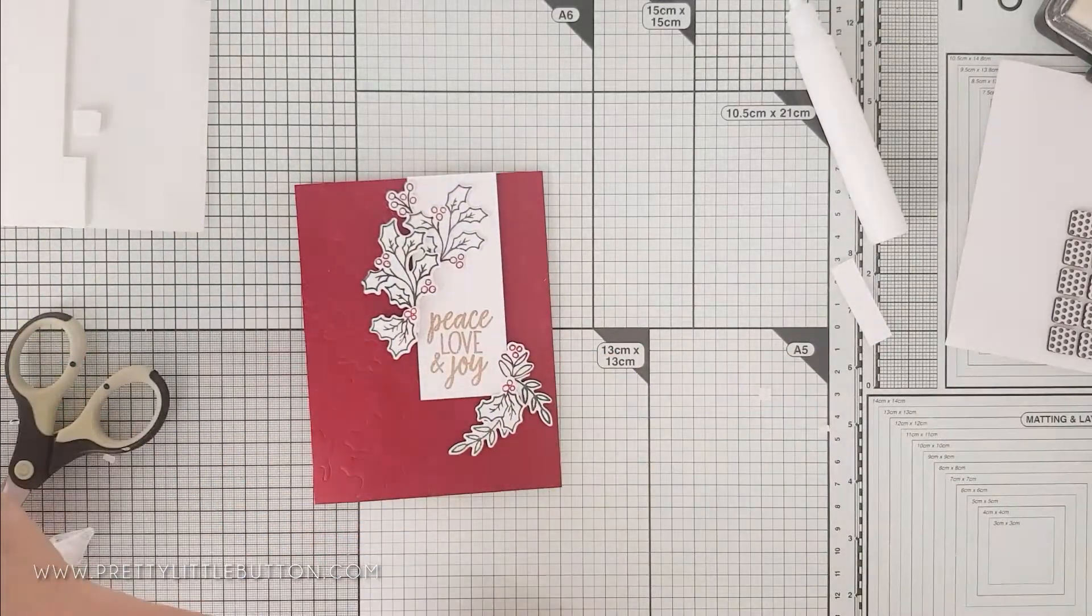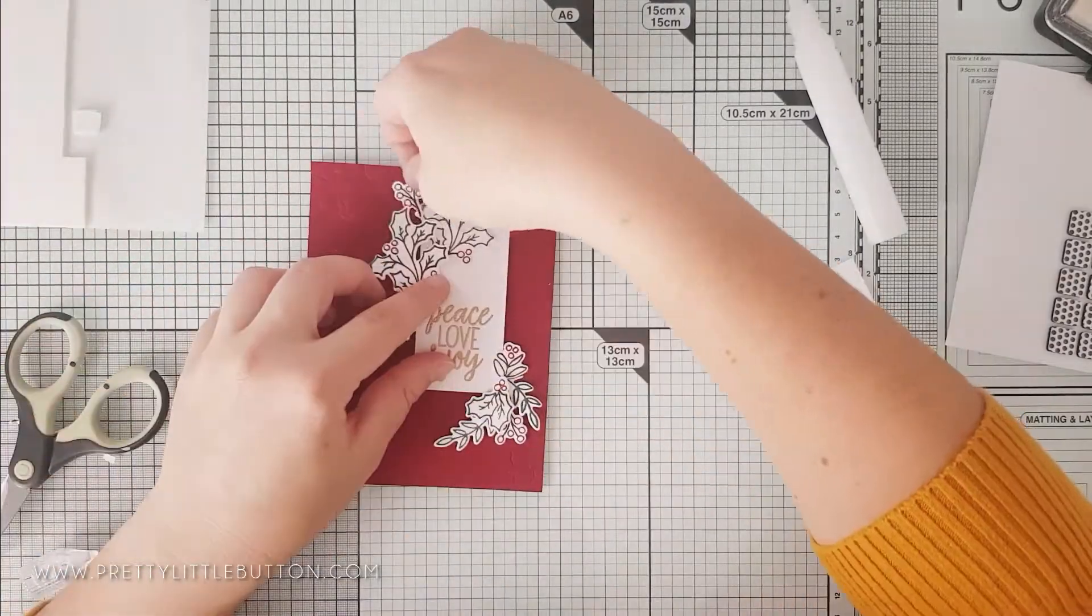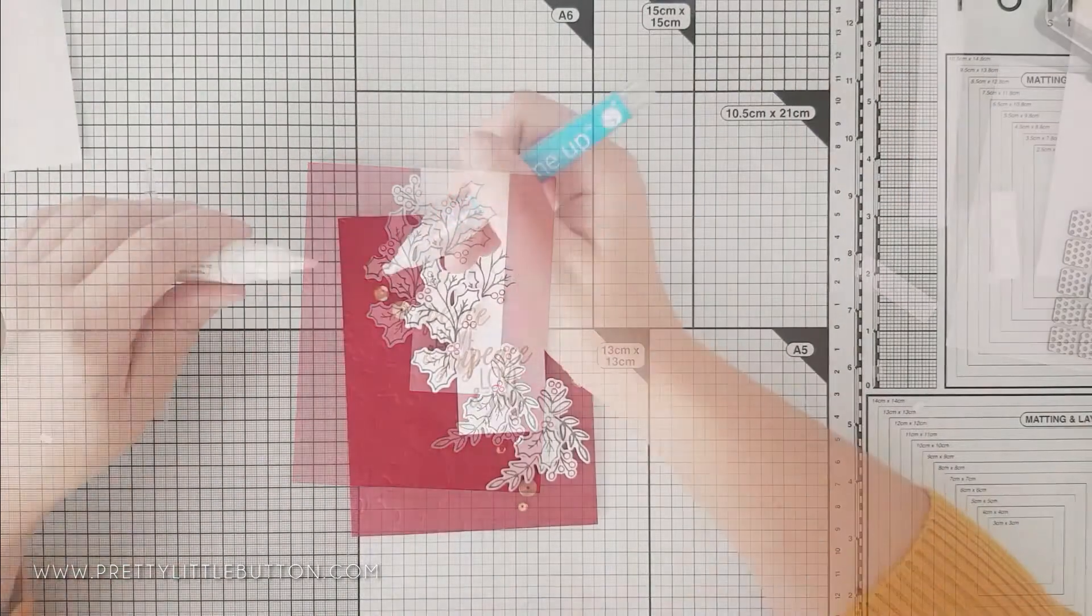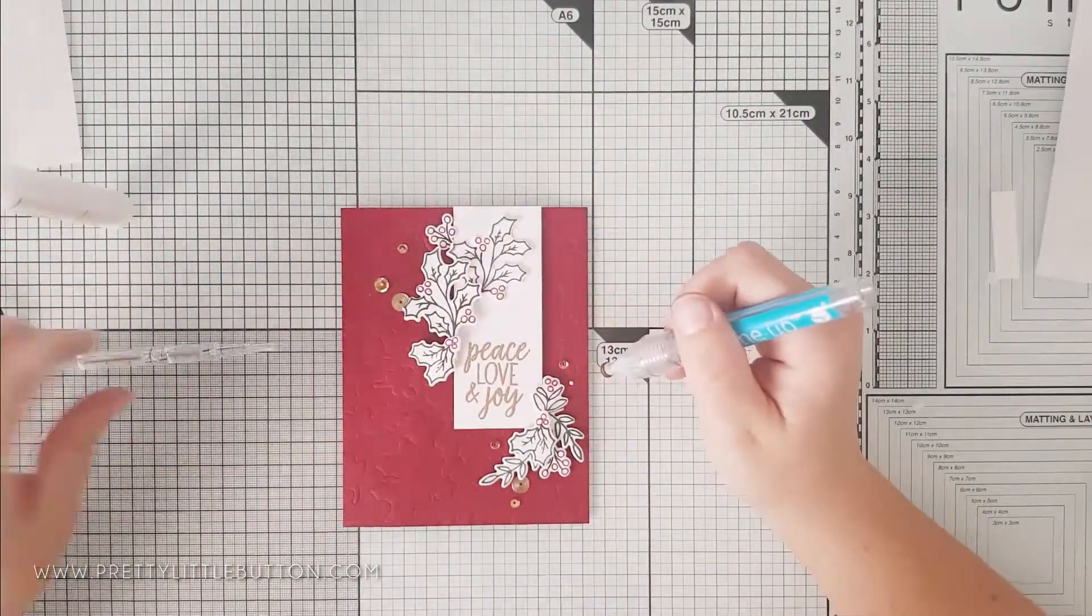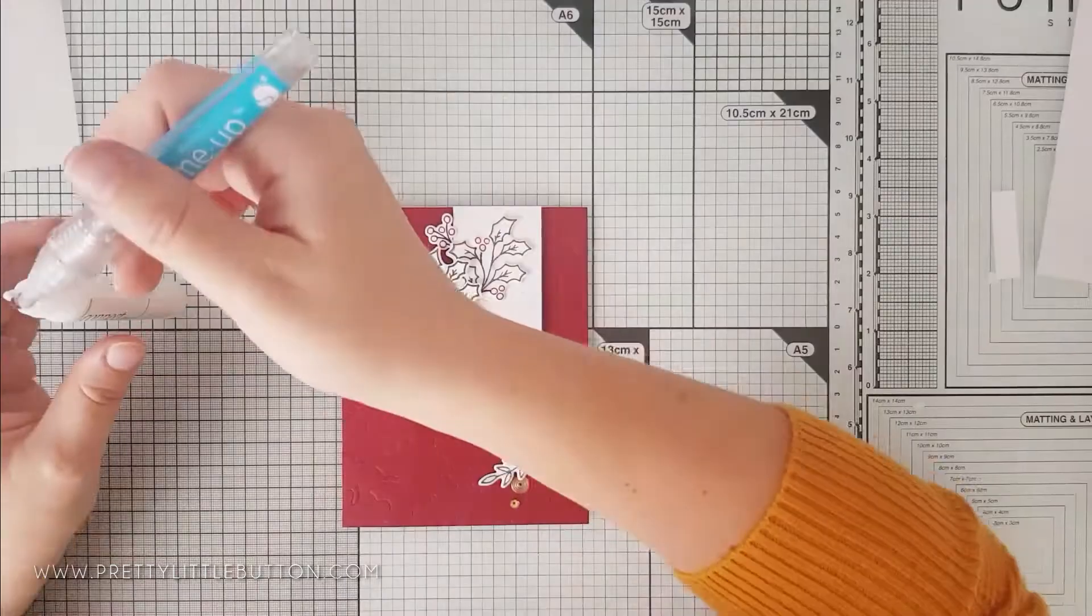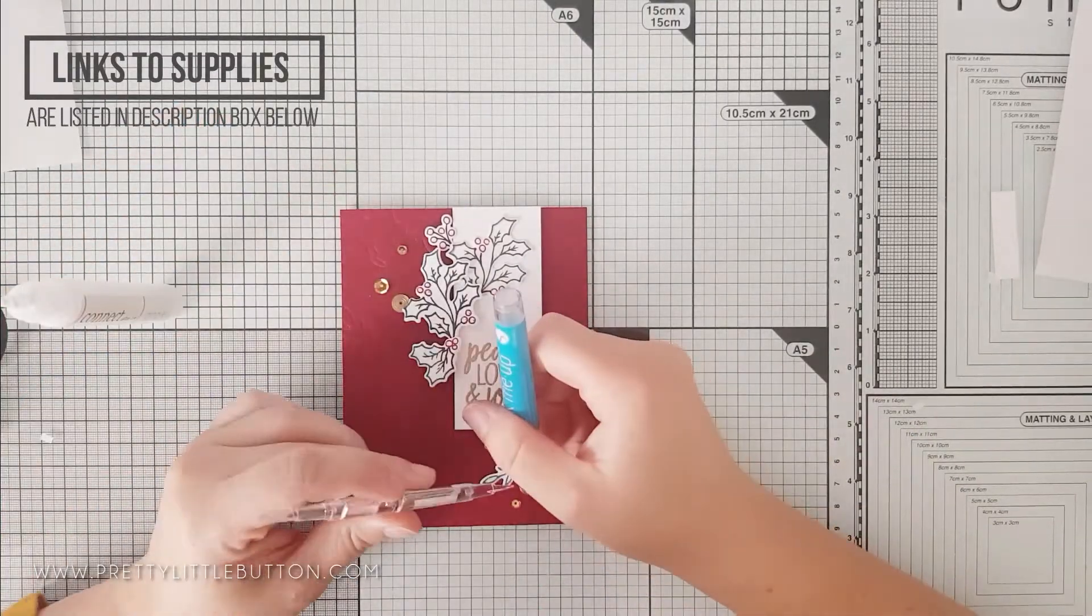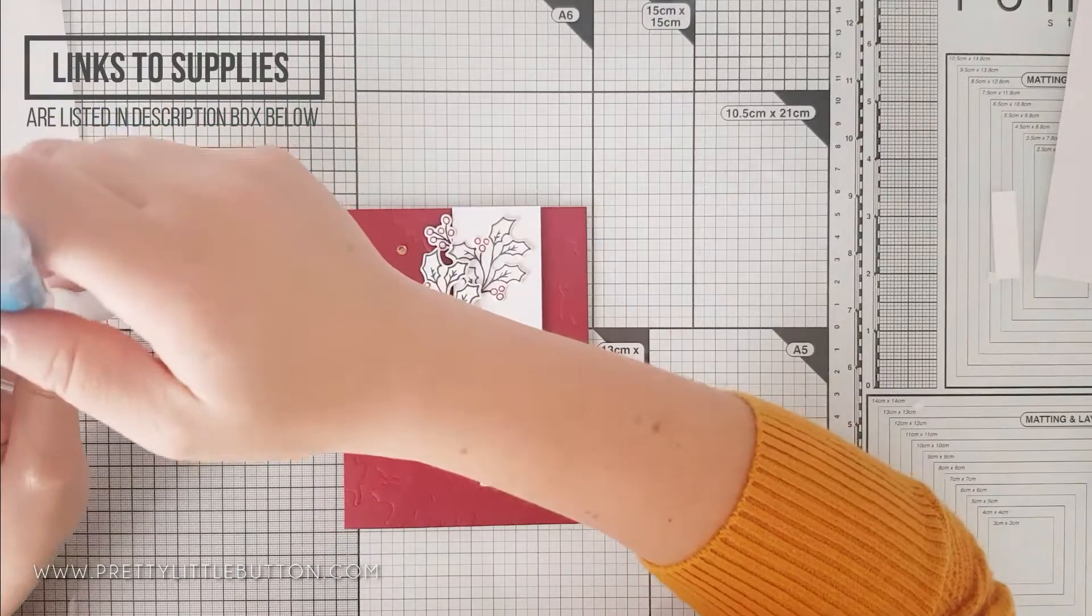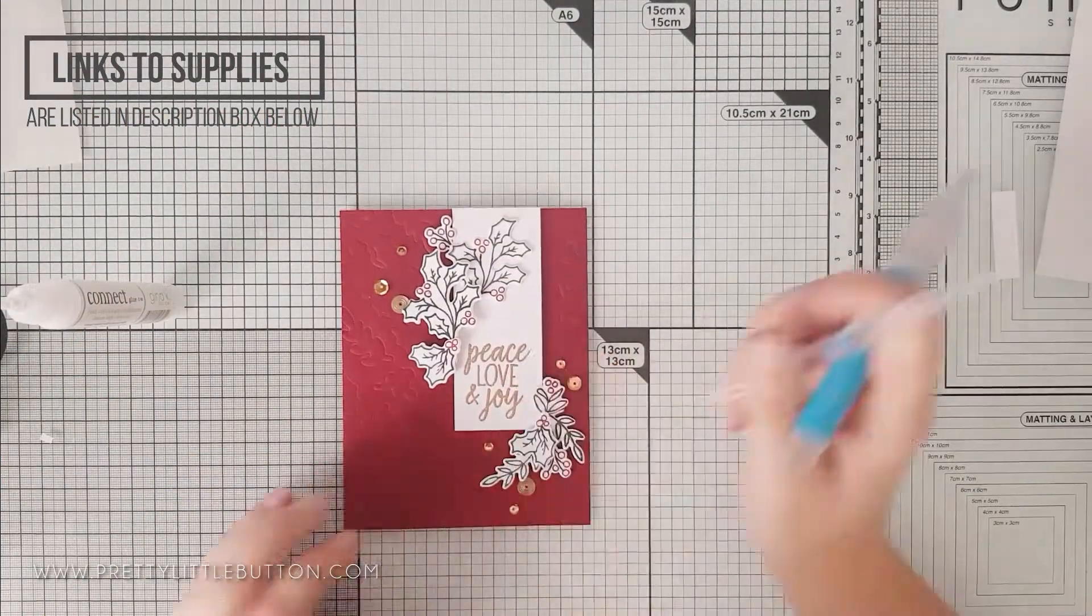I'm going to finish it off by adding some sequins. This connects lovely with the gold heat embossing. This Oak City sequin mix has a lovely selection of bronzy gold, coppery sequins in varying different sizes. I'm just scattering these around all the foliage that I added. I'm using some liquid glue, Gina K liquid adhesive and my quick sticks tool just to adhere those down.